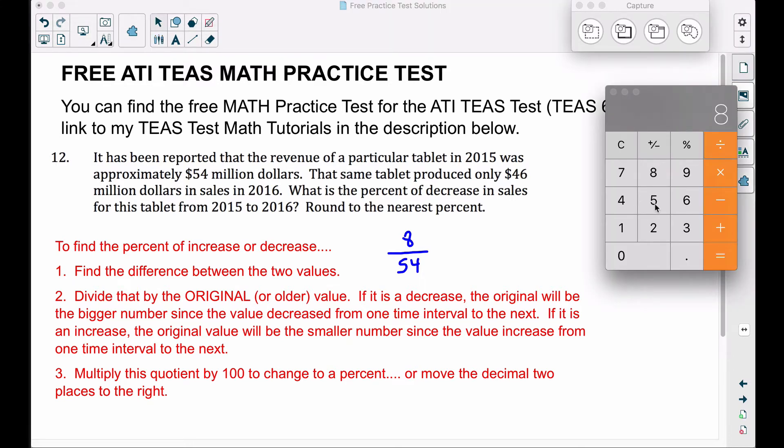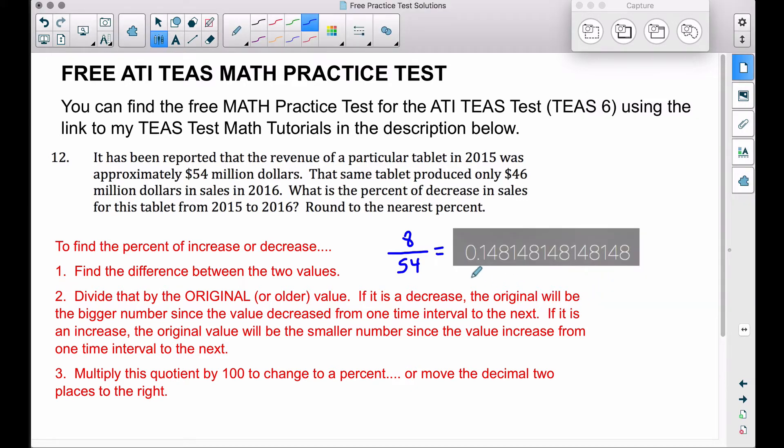So let's divide these two numbers: 8 divided by 54, and we get this decimal 0.148 repeated—actually the 148 gets repeated over and over.